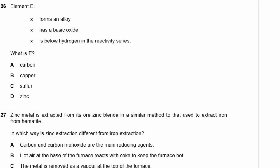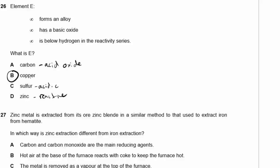Question 26. Element E forms an alloy, has a basic oxide, and is below hydrogen in the reactivity series. What is E? Carbon has an acidic oxide — no. Carbon doesn't form alloys either. Copper forms alloys, copper oxide is basic, and copper is indeed below hydrogen in the reactivity series — very unreactive. Sulfur has an acidic oxide. Zinc is more reactive than hydrogen. So the answer is B — copper.